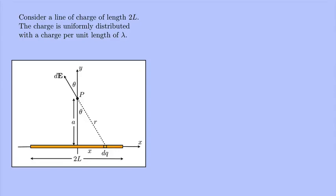In another video we considered a line of charge of length 2L, and we found the electric field at a point P above the midpoint of the line. In the process of finding the electric field, we came across an integral from negative L to L of Ka lambda dx over x squared plus a squared to the 3 halves power.